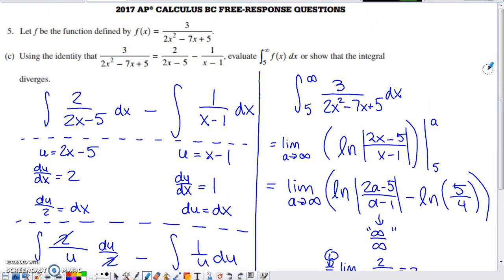Part C is where we start to get to the BC only portion of the problem. They say, hey, use this identity. They've basically done a partial fraction decomposition with this expression for us, and they've decomposed this single fraction into the difference of these partial fractions.